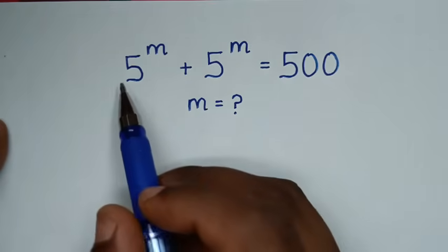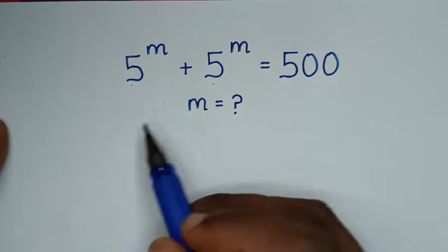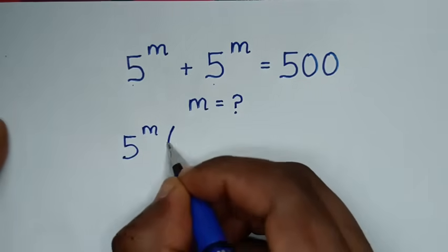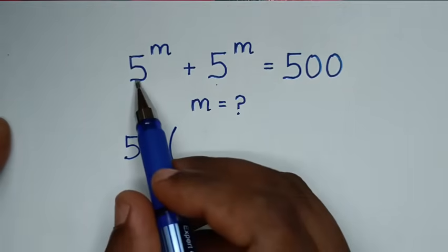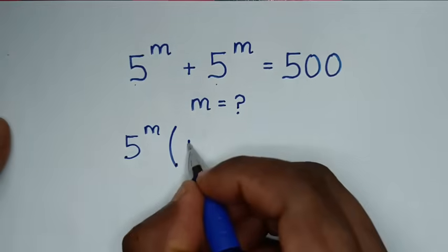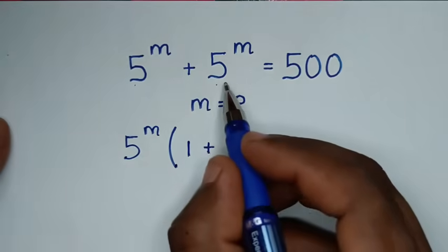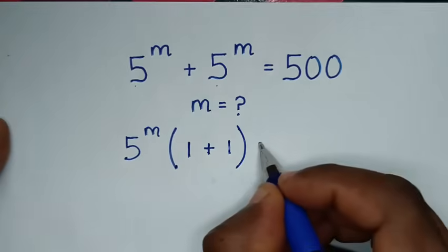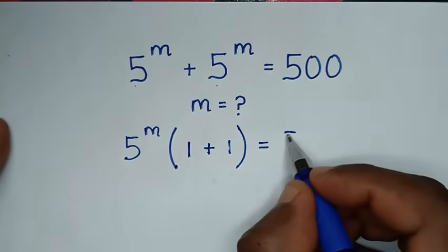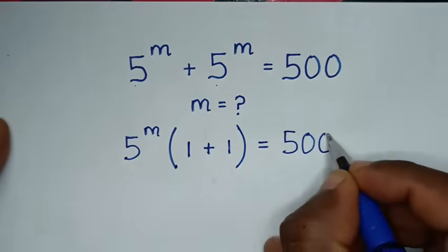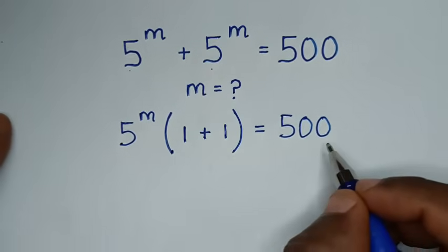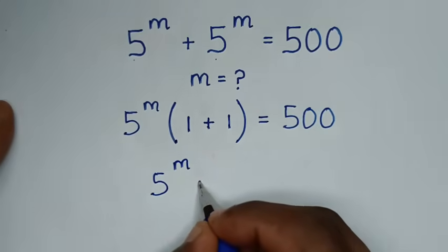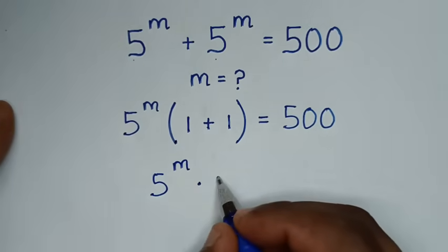Now, in the first step, 5 power of m is common. So we will take 5 power of m outside the bracket. Then 5 power of m divided by 5 power of m is 1, plus 5 power of m divided by 5 power of m is 1. So it will be 5 power of m times 1 plus 1, which is 2.